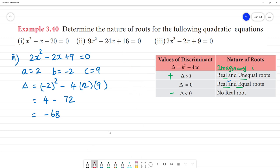Delta is less than 0. Delta is less than 0. The answer, it is an imaginary number. So that has no real roots. The third one has no real roots.